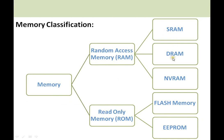SRAM and DRAM both come under the category of RAM. There is another memory called NVRAM — non-volatile RAM — which is basically an SRAM with a battery built into the IC chip. Flash memory, EEPROM, and hard disk drives come under the category of ROM. The size of ROM memories is generally high compared to RAM because the cost of RAM is very high.